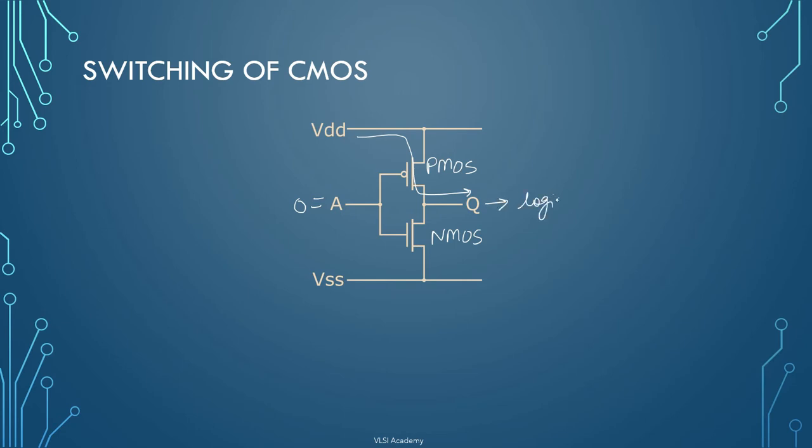So that will be logic 1 and if there is a capacitive load here, it will charge to logic high voltage. And when we give A as 1, at that time this will turn off and the below transistor will turn on and it will provide a low resistance path for the load and hence, this load will discharge to the ground. Hence, this logic 1 will turn to 0.